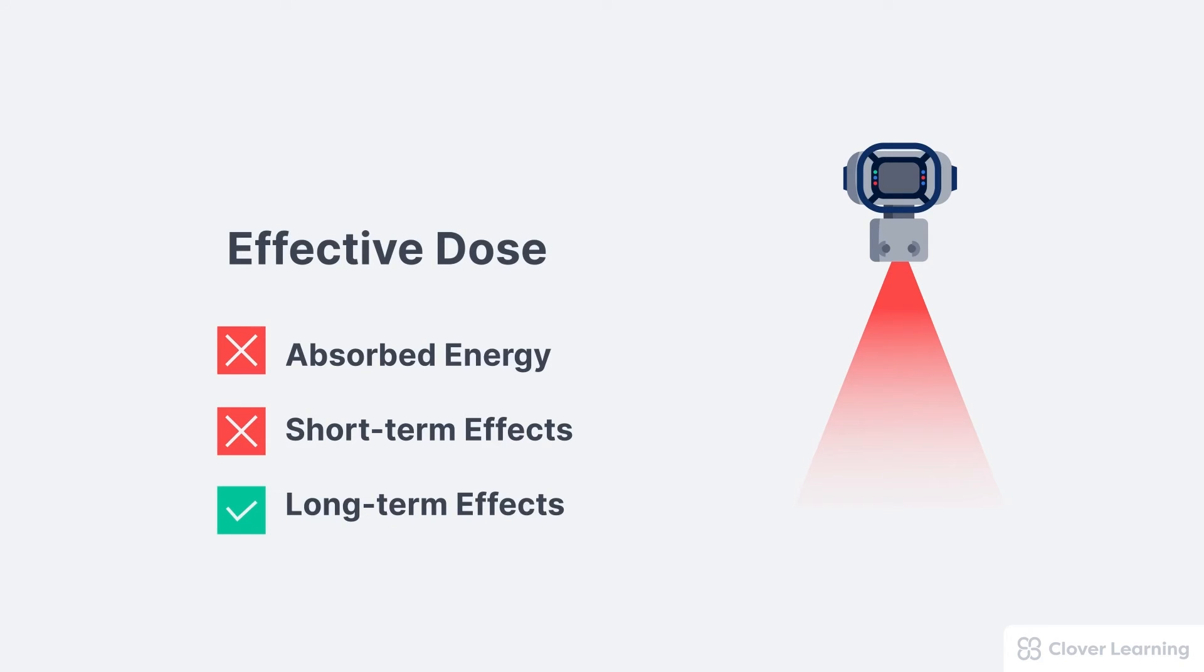Effective dose is used to evaluate the long-term effects like cancer, but it is not used to calculate the total absorbed energy in the patient, and we cannot use effective dose to predict short-term effects like skin erythema or epilation. So even though these dose measurements might be used in different ways, we also understand that they're related in some ways.